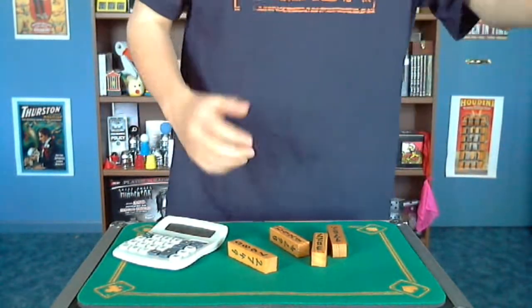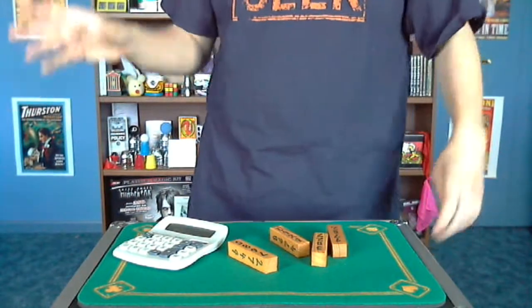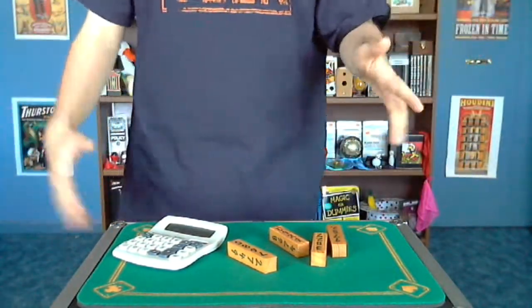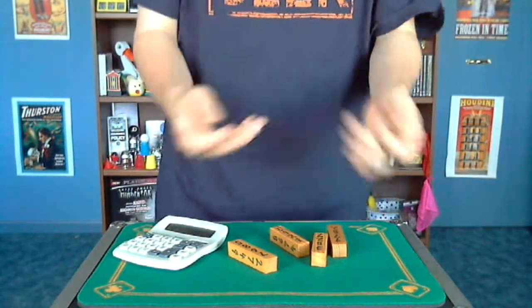Like, you have to remember hearts go with clubs. Diamonds go with spades. You have to add 17, subtract 2, divide by 13. And that's going to be their card where it is in your stack.